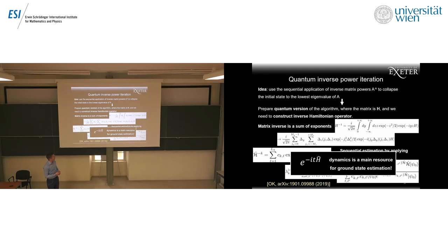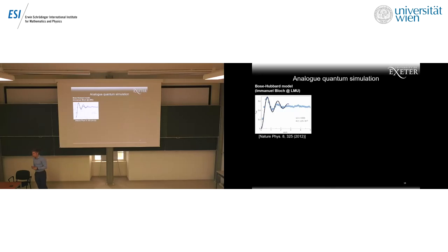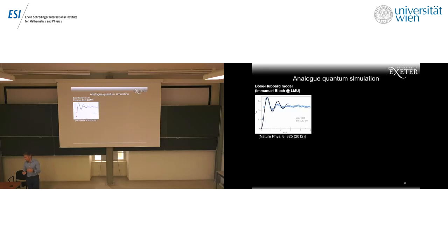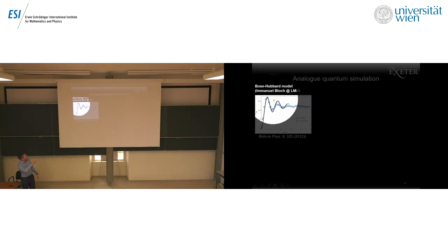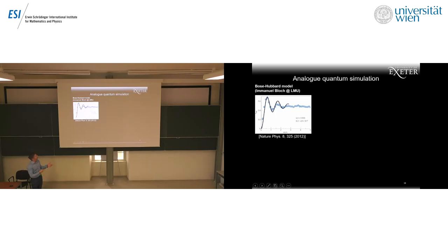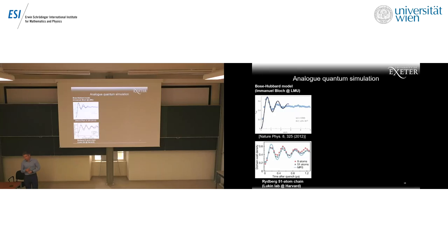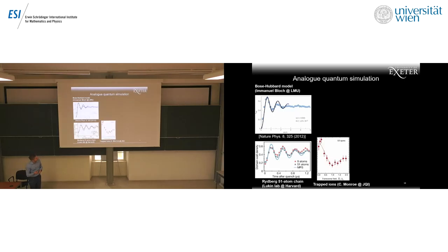The ability to perform dynamics is the main resource, and analog quantum simulators are where we can do it. Immanuel Bloch's group showed long ago that you can do things with analog simulation that are very difficult classically. Results from Lukin's lab with 51 qubits are very encouraging. Chris Monroe's group with 53 trapped-ion spins measured dynamical phase transitions — a very relevant technique where they managed to propagate large system sizes for a long time.